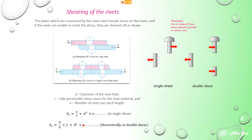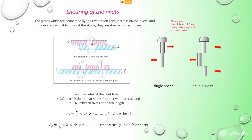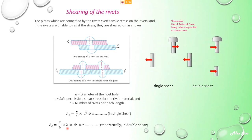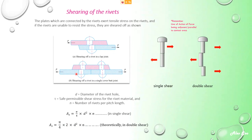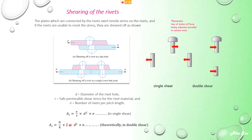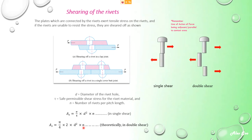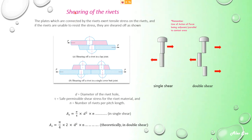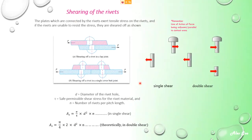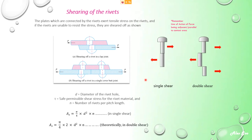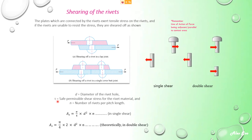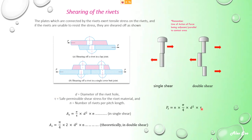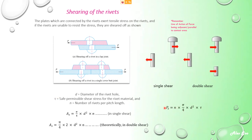In the formula, D is the diameter of the rivet or hole, τ is the safe permissible shear stress for the rivet material, and N is the number of rivets per pitch length. The shear area for single shear is π D² / 4 × N. For double shear, multiply by 2. The shearing strength is then: P_s = τ × area.